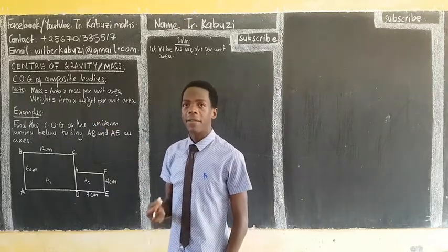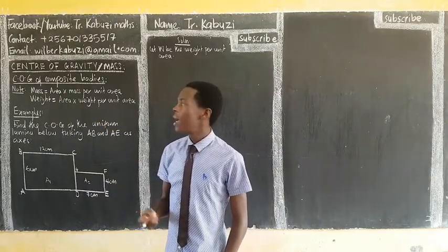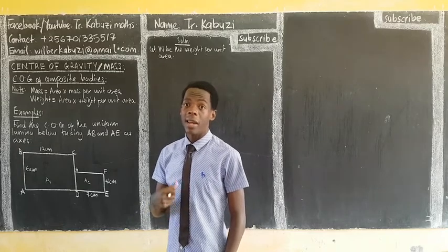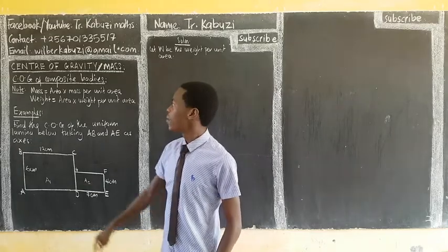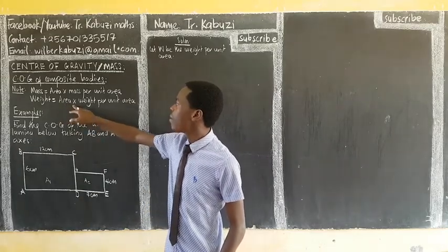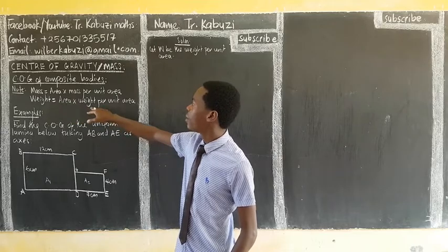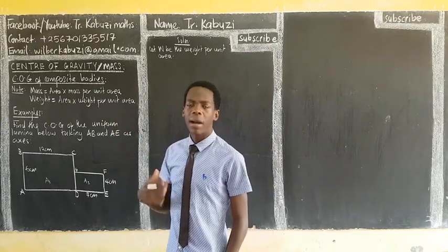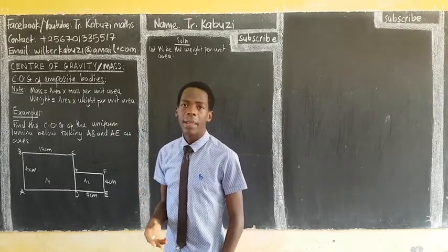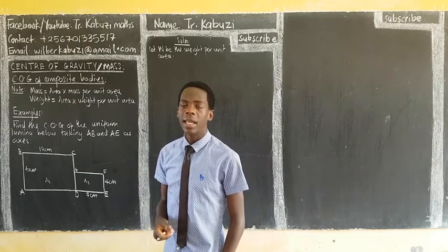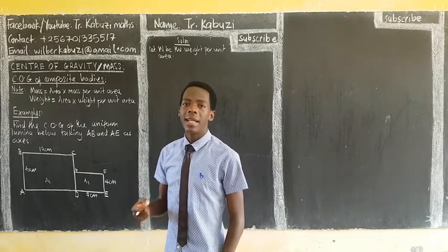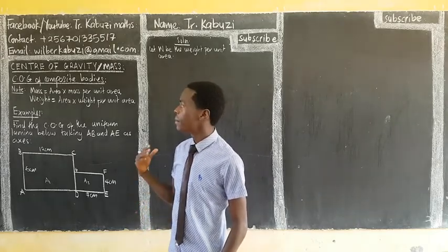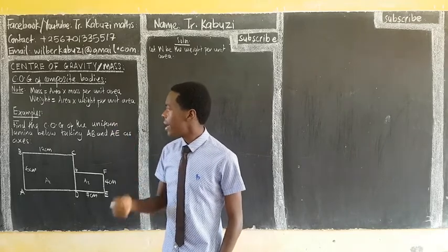This works if they ask for the center of mass. But if they ask for the center of gravity, then we work with weight. To get weight, we get the area times the weight per unit area. In most cases we don't have the weight per unit area of the lamina, so we say W is the weight per unit area.